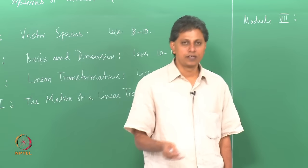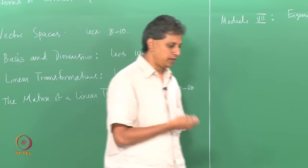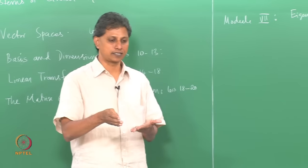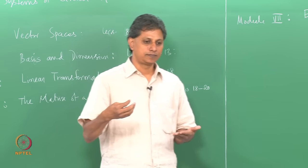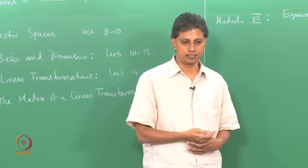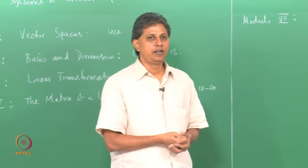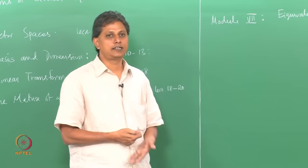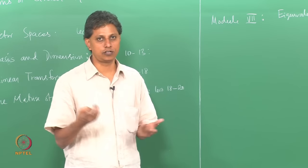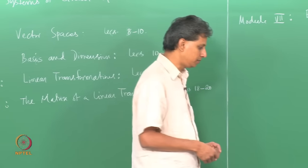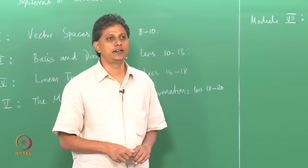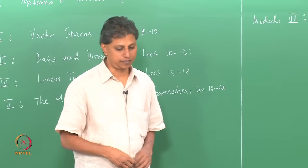We also discuss the relationship between the minimal polynomial and the characteristic polynomial. There are at least two polynomials associated with a linear transformation; we study their relationships and what can be said about the minimal polynomial when the operator is diagonalizable. Towards the end of the seventh module we will also discuss a proof of the Cayley-Hamilton theorem for matrices, which informally states that the characteristic polynomial of an operator is an annihilating polynomial of that operator.